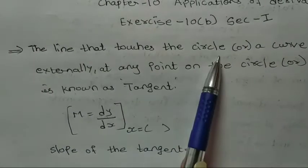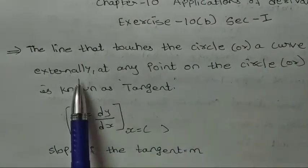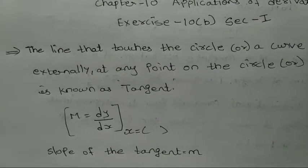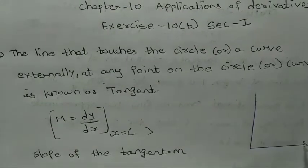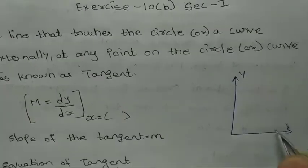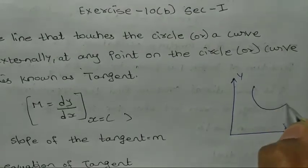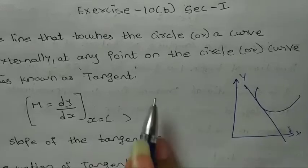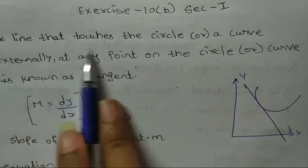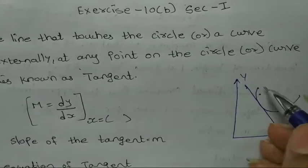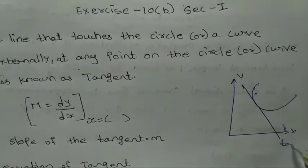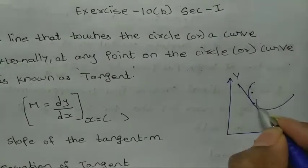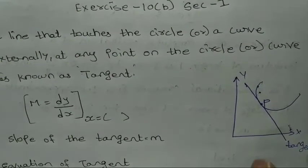First, the definition of tangent: the line that touches the circle or a curve externally at any point on the circle or curve is known as tangent. For example, this is a curve, and one line touches the curve — that is known as tangent at point P.